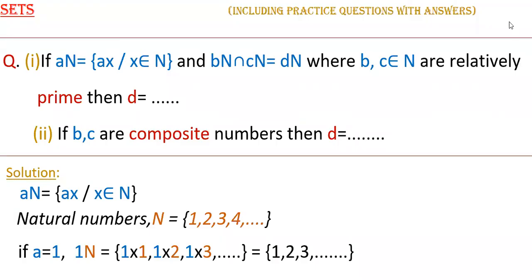Hello everyone, today I am going to tell the solution of this problem. Here the problem is: if An = {ax | x ∈ N} and Bn ∩ Cn = Dn, where B and C are relatively prime, then D is equal to what? And in the second case, if B and C are composite numbers, then D is equal to what?